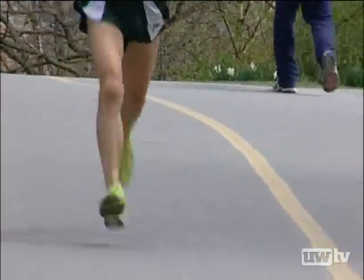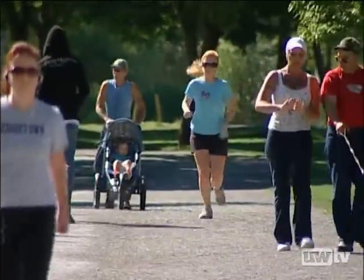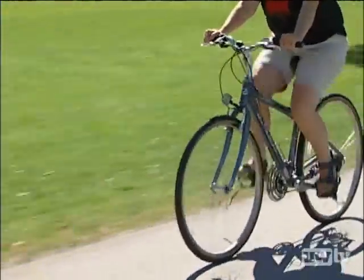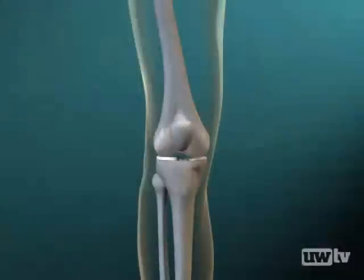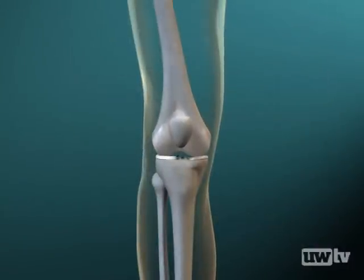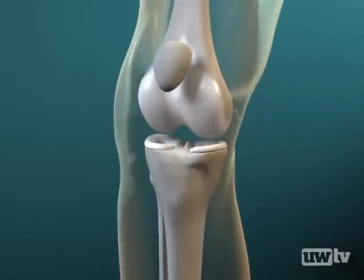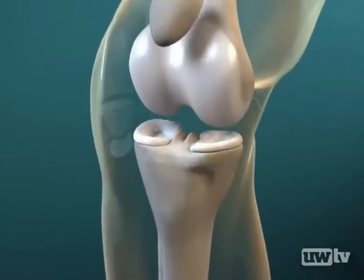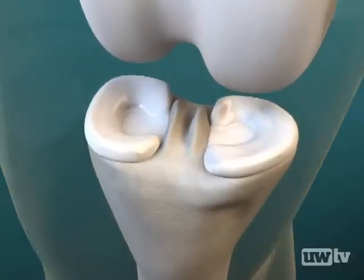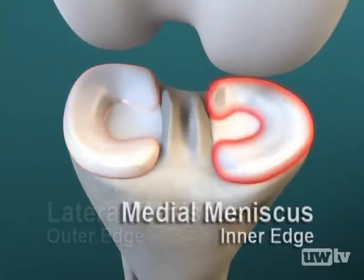It's estimated that one-third of all medical visits in the United States come from people seeking treatment for a knee injury. One of the most common injuries occurs to the meniscus cartilage, located between the femur and tibia which forms the knee joint. The meniscus is a rubbery c-shaped disc that cushions the knee like a shock absorber. Each knee has two menisci, one at the outer edge of the knee and one at the inner edge.